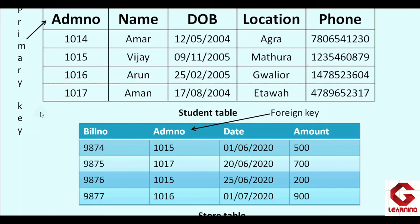Now the foreign key concept: with two tables in the database, I want to link them to access data from both. The admission number column exists in both tables — it is the primary key in the student table, but in the store table it is not the primary key. In the store table, admission number is set as the foreign key, and this foreign key is used to link the store table to the student table.